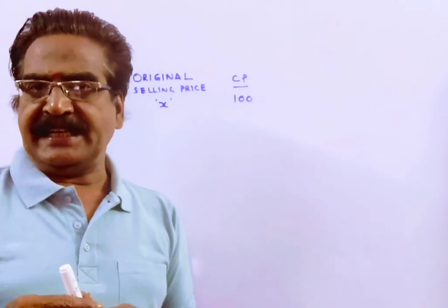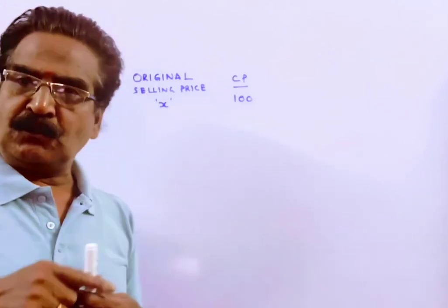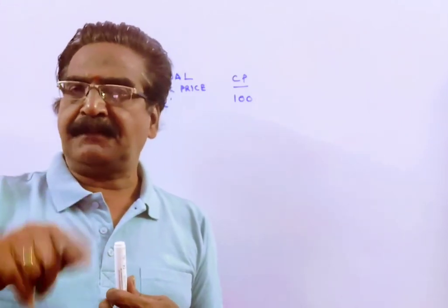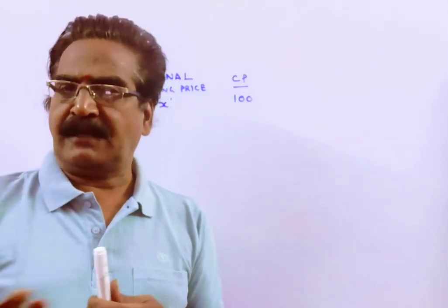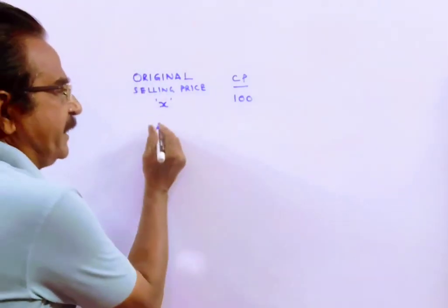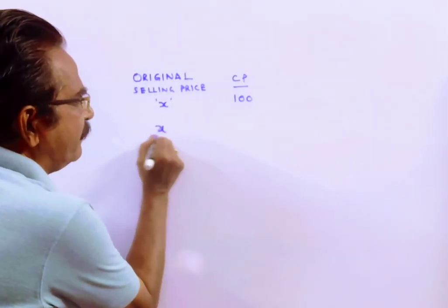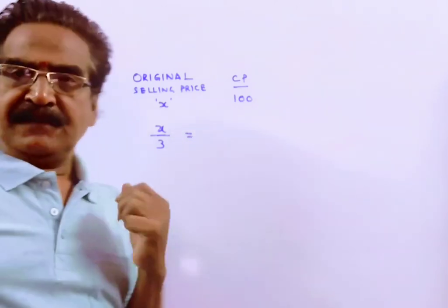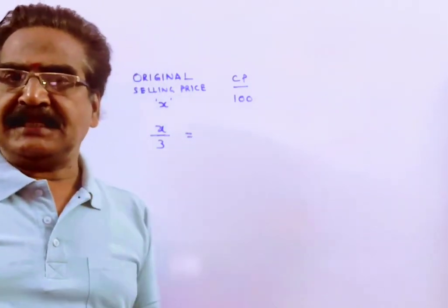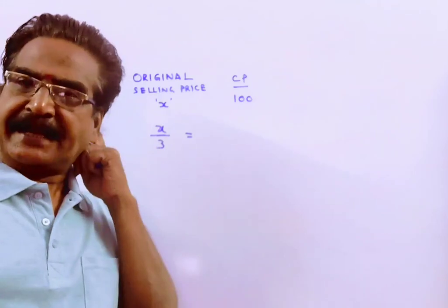It is given that if the article is sold at 33 1/3 percent of its original selling price, 33 1/3 percent means 1/3. If it is sold at 1/3 of the original selling price, then there will be a loss of 33 1/3 percent.